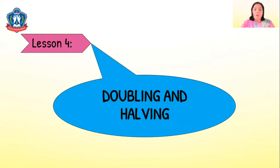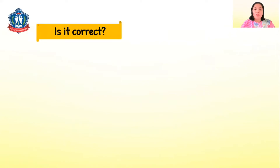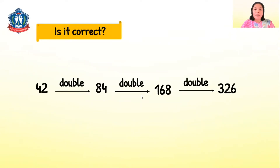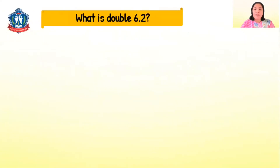Now let's go to Lesson 4: Doubling and Halving. Do you remember our lesson on finding the doubles and halves of whole numbers? This is the same but with decimal points. Let's review — is this series correct? 42 doubled is 84, 84 doubled is 168, and 168 doubled is 336. Try to figure that out.